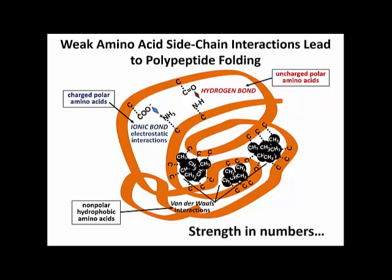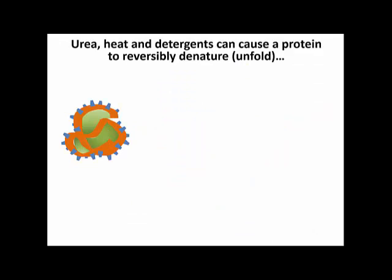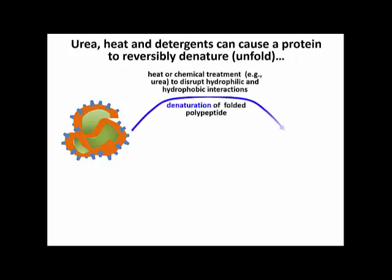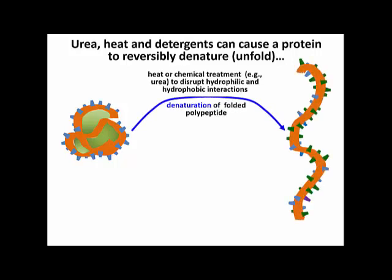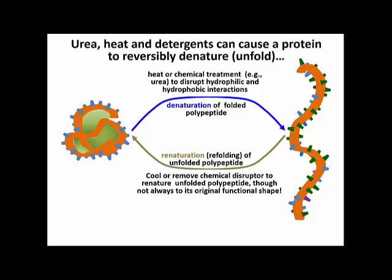We can denature proteins — that is, disrupt those weak bonds. Urea, for example, denatures a protein, meaning it unfolds it, basically disrupting all of the van der Waals forces, ionic interactions, and hydrogen bonds holding the three-dimensional structure together. If you remove the urea, which you can do by the process of dialysis, you can sometimes get back the folded protein you started with — the protein would refold. What really happens when you remove the cause of denaturation is that the protein folds to its lowest free energy conformation, which is another way of saying it folds to its most stable state.